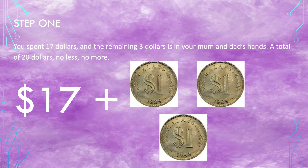Step 1: You spent $17, and the remaining $3 is in your mom and dad's hands. A total of $20 — no less, no more.